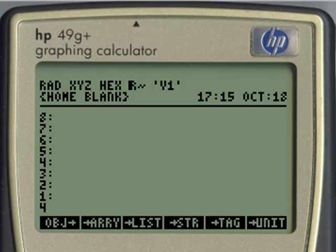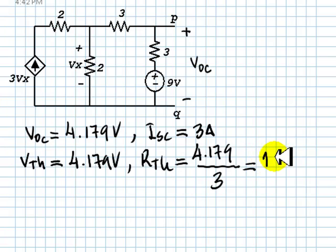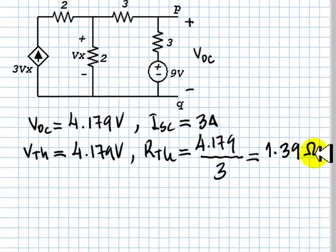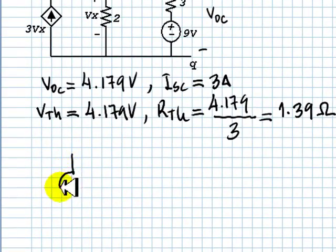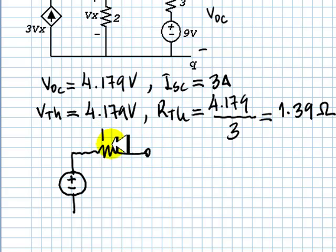4.179 divided by 3, 1.39 ohms. 1.39 ohms. To complete the exercise, we draw the Thevenin equivalent. With a VThevenin and an RThevenin. Well, RThevenin is 1.39 ohms. Whatever you compute in here, you write there.